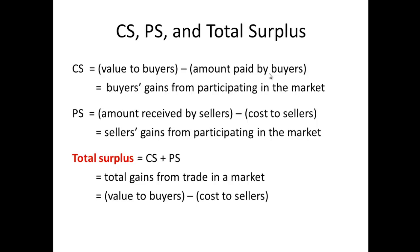Total surplus is consumer surplus plus producer surplus, and from that we derive the total value of the market. When we look at welfare economics and whether the consumer and producer benefit from participating in the market, we need only look at total surplus and its parts — consumer surplus and producer surplus — in order to determine whether there were any gains.